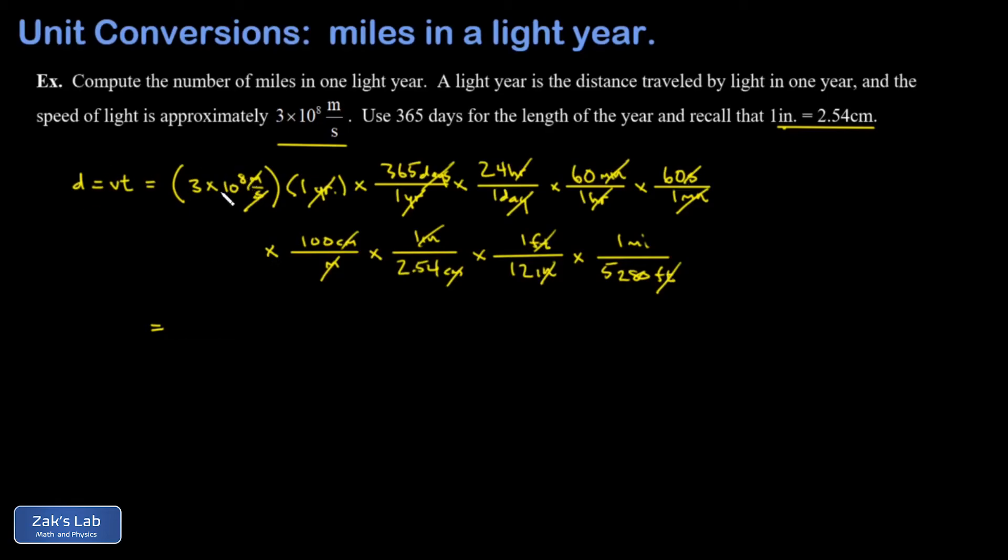So I have 3 times 10 to the 8th times 365 times 24 times 60 times 60 times 100, and then that whole thing is going to be divided by, it looks like all the denominators are ones at first and then I have a 2.54 times 12 times 5280. When I run the numbers on this I get 5.88 times 10 to the 12 miles.